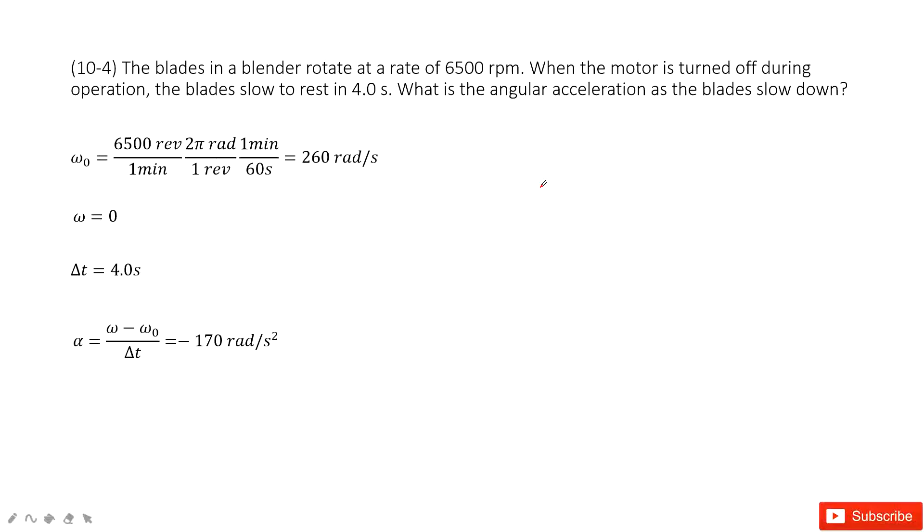In this chapter, we talk about rotational motion. As this one, you can see, we know the initial angular velocity is 6500 revolution per minute. Normally when you need to convert the unit to radians per second.